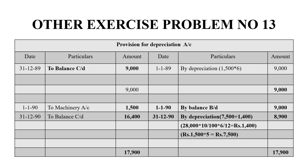Rs.9,000 is brought down on the credit side as balance brought down on 1-1-1990. This year we have to account for the sold machinery. The balance is Rs.7,500 worth of machinery. We calculate depreciation for 6 months: Rs.7,500 × 10/100 × 6/12 = Rs.1,400, giving Rs.8,900 total. The accumulated depreciation is transferred to the machinery disposal account. The total on both sides gives a balancing figure of Rs.16,400 on 31-12-1990, and the grand total on both sides is Rs.17,900.